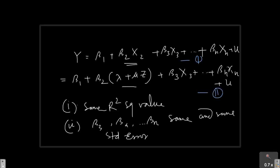We cannot measure the intercept term because here the intercept term is going to be beta 1 plus beta 2 lambda. Since I don't know lambda, I can't measure this intercept term, and that is fine.